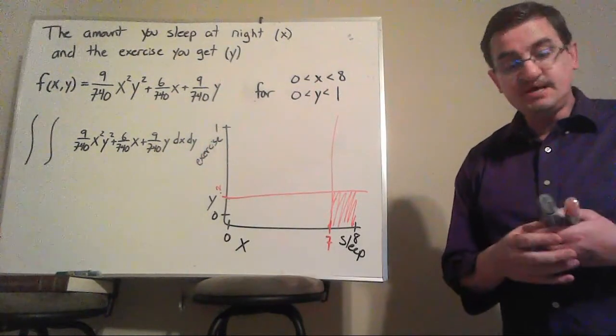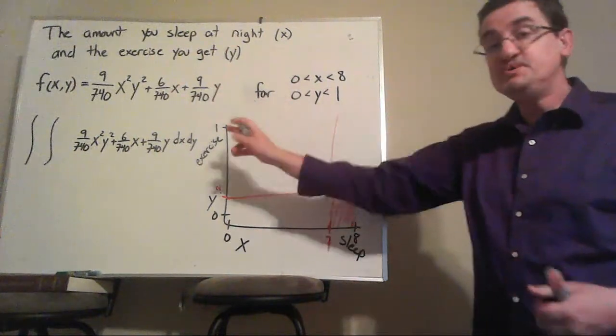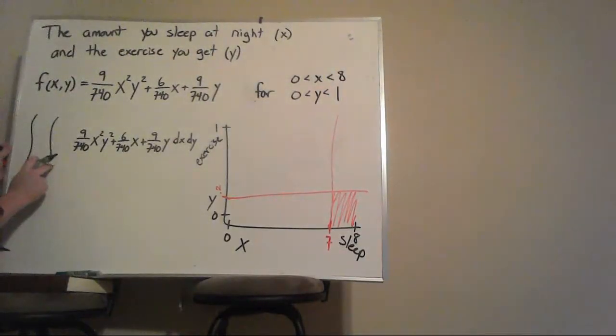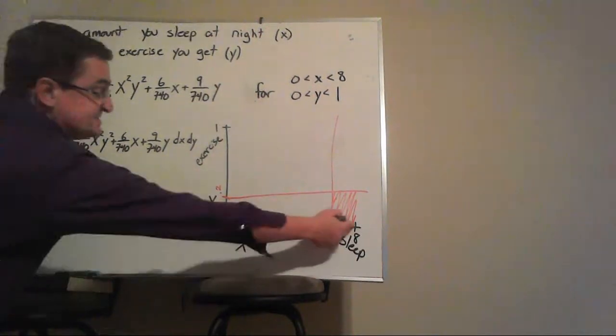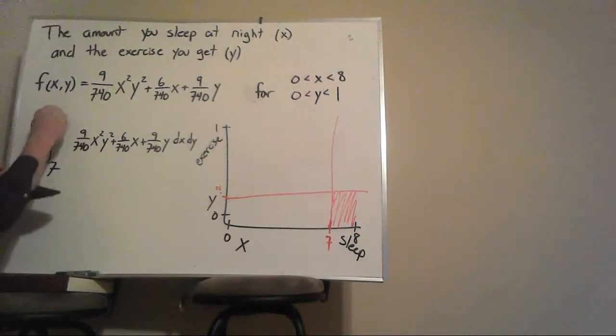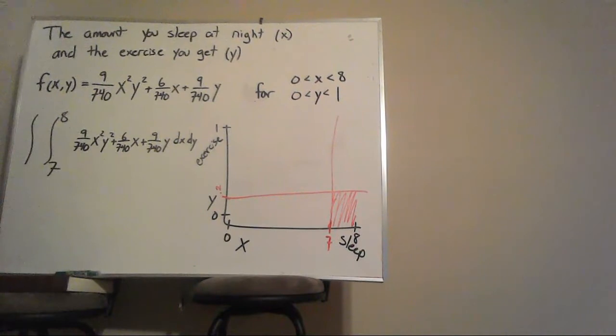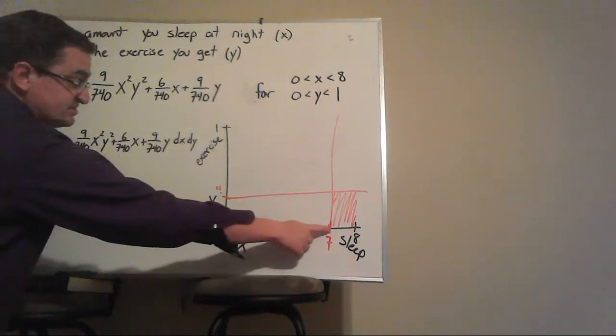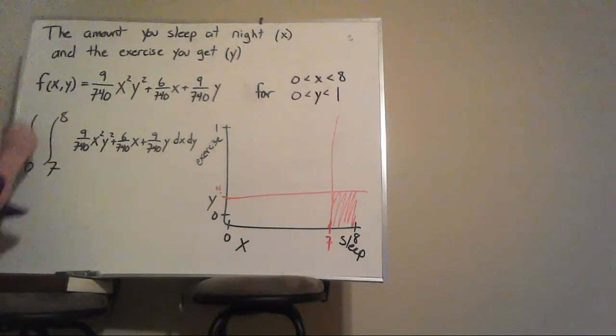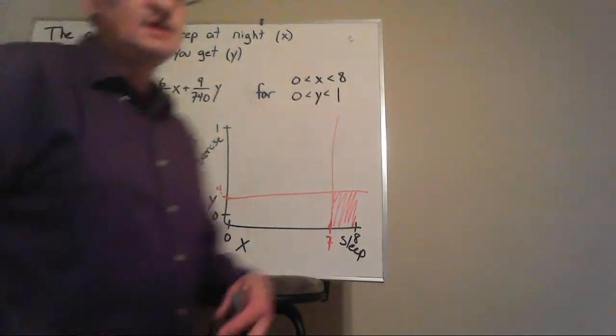I'll show an example later where it does matter. If I'm doing sleep first, then over here on the integral for sleep, it needs to go from seven to eight. Look at my picture. If I'm talking about the exercise piece, it goes from zero to 0.2 like this.